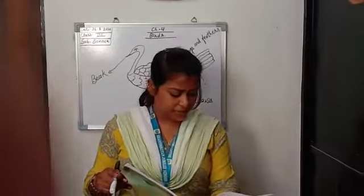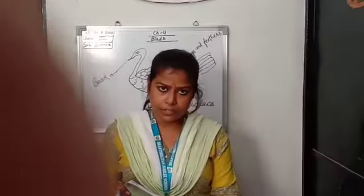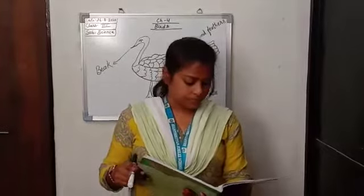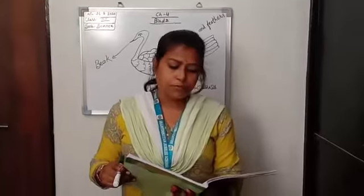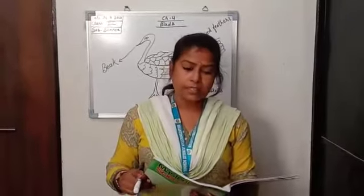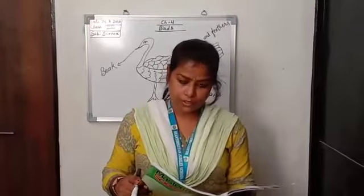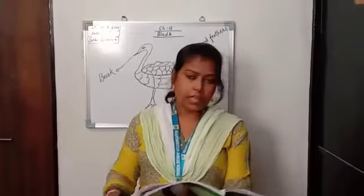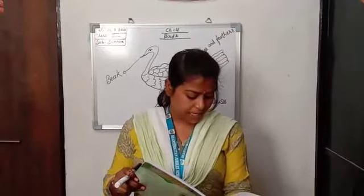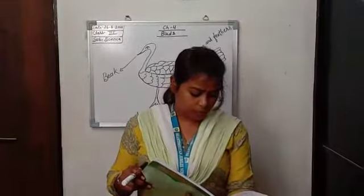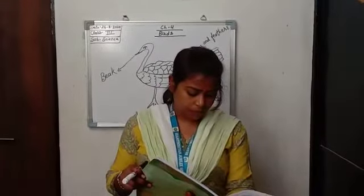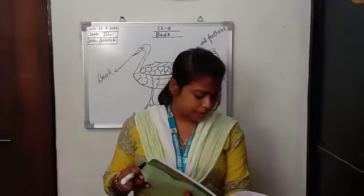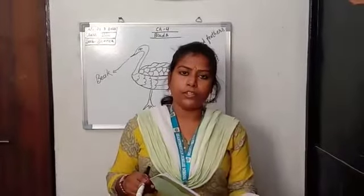There are three types of feathers: down feathers, flight feathers and body feathers. Down feathers are found all over the body of the bird and help it to keep warm.